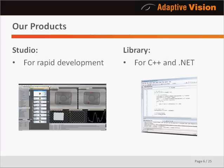You can choose between two products. The first, Adaptive Vision Studio, is a graphical programming environment designed for fast development and does not require any low-level programming skills. The second, Adaptive Vision Library, has the same set of image analysis algorithms but in a form directly available for C++ and .NET programming.